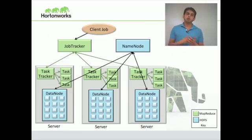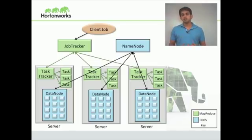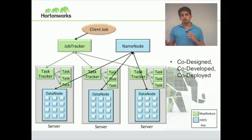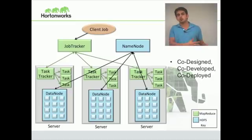As we talk about Apache Hadoop, it's important to remember that both the file system and the processing system, which is MapReduce, are co-designed, co-developed, and more importantly, they're actually co-deployed. What it means is you have a single set of servers or machines on which you deploy both HDFS and MapReduce, and you don't have a separate storage network and a separate processing network.